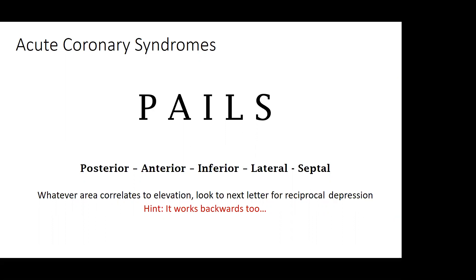A really helpful trick is the mnemonic PALES: Posterior, Anterior, Inferior, Lateral, and Septal. This mnemonic helps with determining where potential reciprocal changes will be. When you see ST segment elevation, look to the next letter to find where ST segment depression should be. For instance, if we have anterior elevation, look inferiorly to see ST segment depression. It also works backwards: if you see depression somewhere on the 12-lead, look in the reciprocal lead to scrutinize for elevation. Ischemia traditionally doesn't localize.